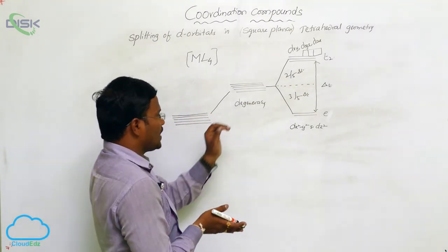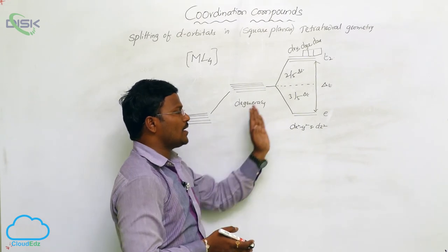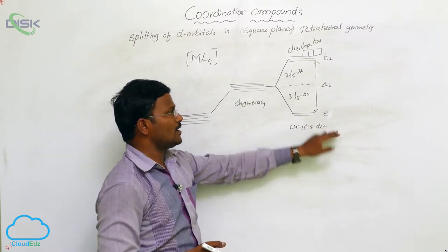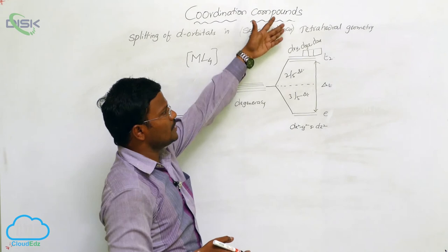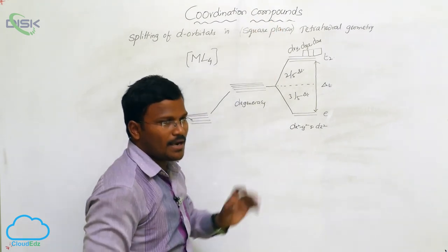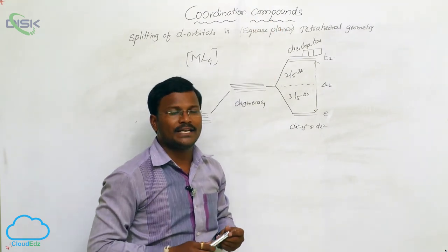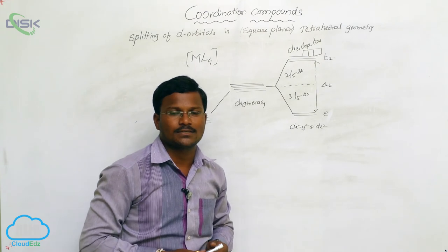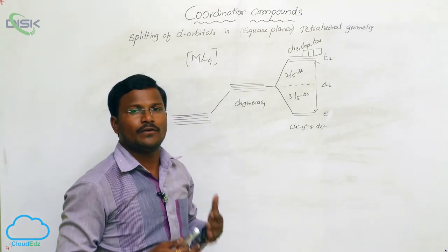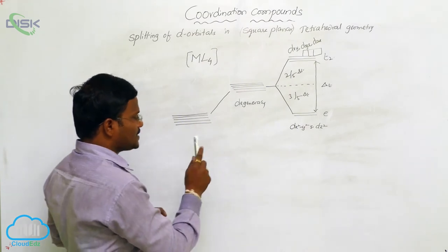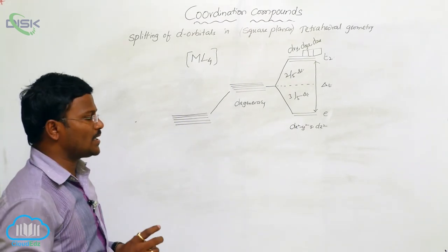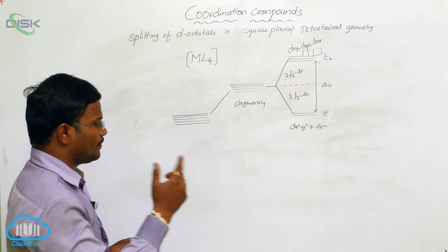In the case of weak field ligands, electrons may occupy dx²-y² and dz² orbitals while also entering into dxy, dyz, and dzx orbitals, and cannot offer empty d-orbitals to make coordination covalent bonds with ligands. So in such cases, it produces outer orbital metal complexes.